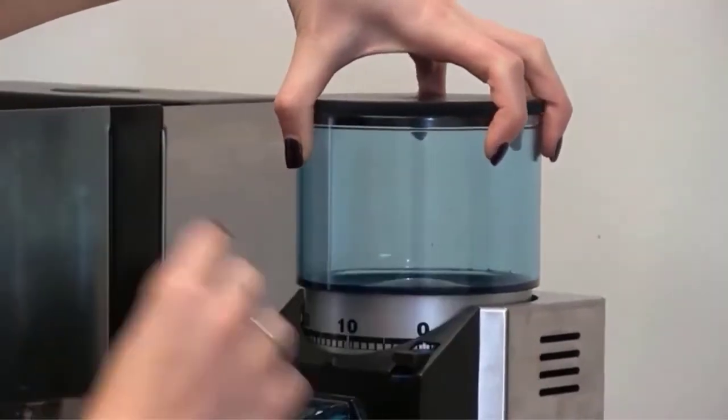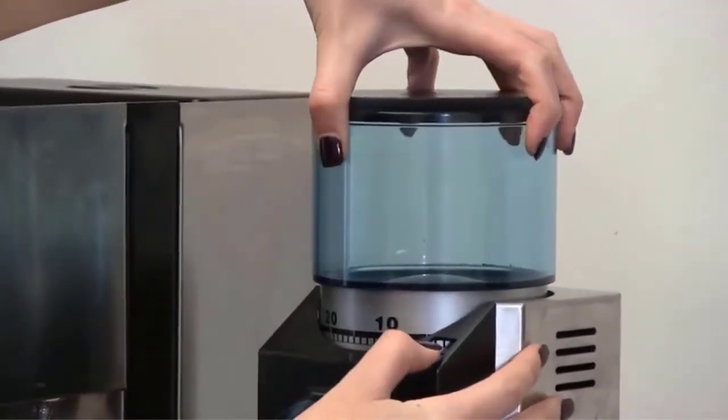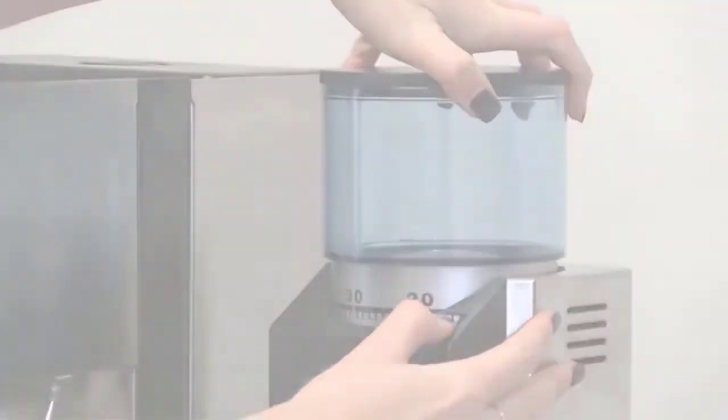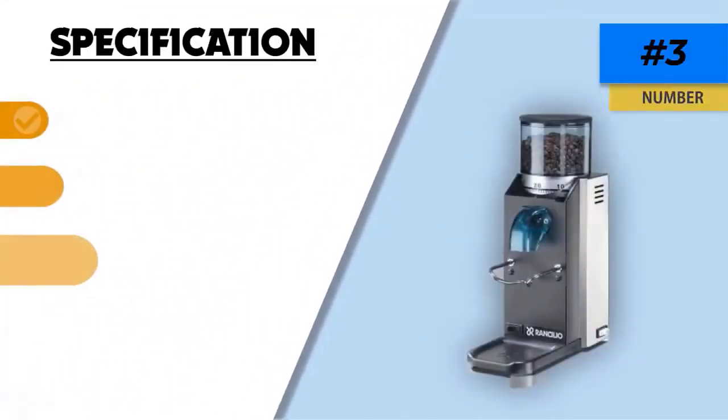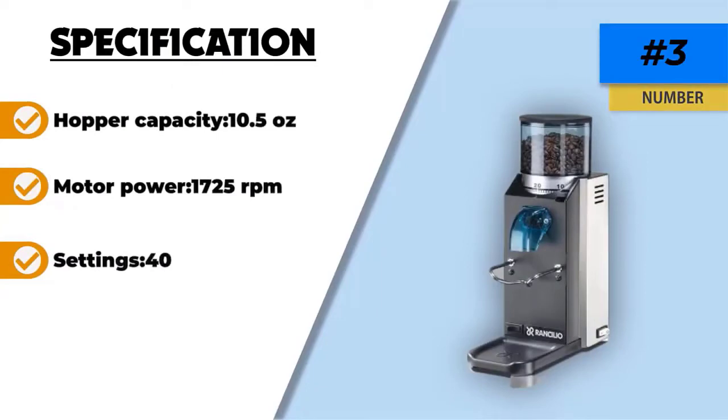Overall, the Rancilio Rocky Espresso Grinder is a hardy manual machine that'll get the job done efficiently for a wide selection of coffee types, for a long time. This is why it's our choice for the best commercial coffee grinder for a small coffee shop.